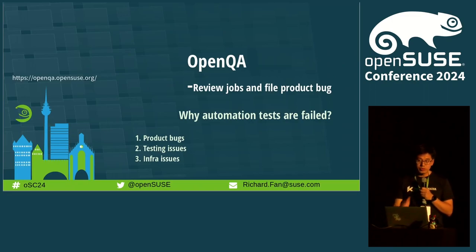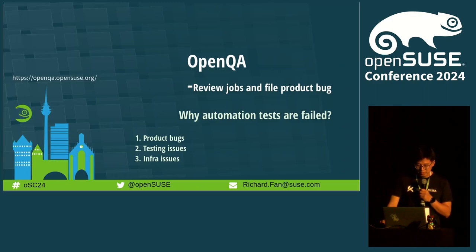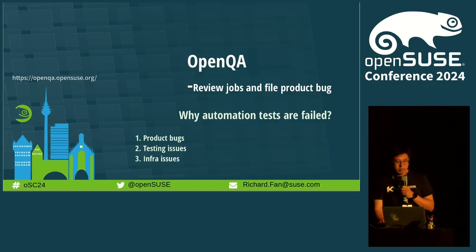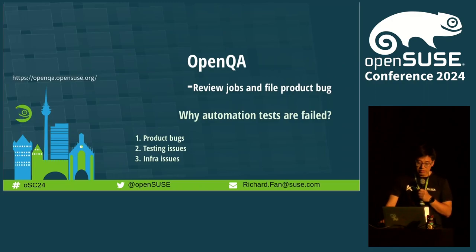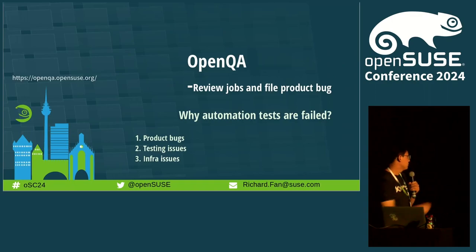If you added some tests into the OpenQA framework and you hit some issues — the test is failing there — how can we handle this? In general, we should have some failures, but the failures are caused by the below three reasons.